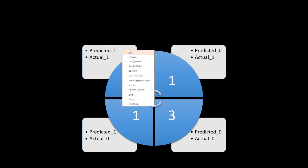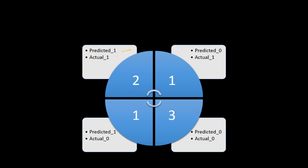There are four basic types of matching and mismatching. First, the predicted value is one and the actual value is also one — predicted bad and actually bad — and there are two such cases. Second, predicted zero and actual zero — predicted good and actually good — with three cases. Third, predicted zero but actual one — only one case. Fourth, predicted one but actual zero — also one case.